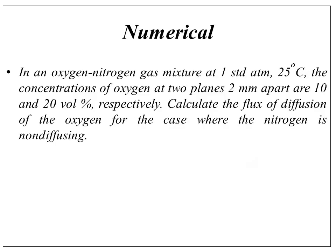In an oxygen-nitrogen gas mixture at 1 standard atmosphere and 25°C, the concentrations of oxygen at two planes 2 mm apart are 10 and 20 volume percent respectively. Calculate the flux of diffusion of oxygen for the case where nitrogen is non-diffusing.